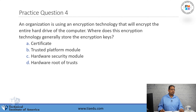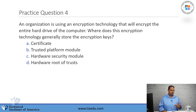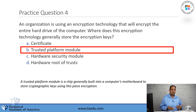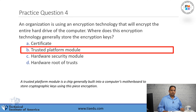Practice question number four: An organization is using an encryption technology that will encrypt the entire hard drive of a computer. Where does this encryption technology generally store the encryption keys? A. Certificate. B. Trusted Platform Module. C. Hardware Security Module. D. Hardware Root of Trust. The answer is TPM, the Trusted Platform Module. If you're doing hard drive-based encryption, you could be using software like Microsoft BitLocker, which uses a TPM chip to store the cryptographic keys for hard drive encryption.